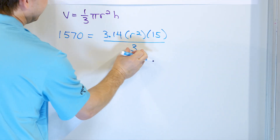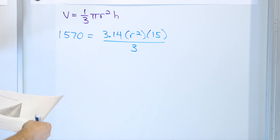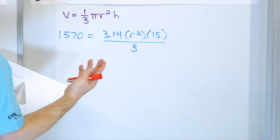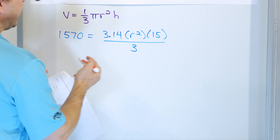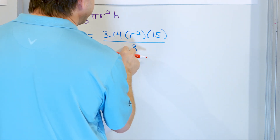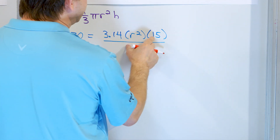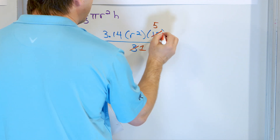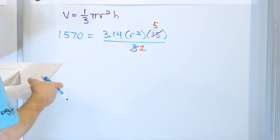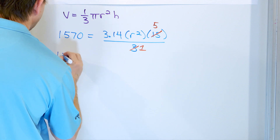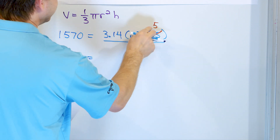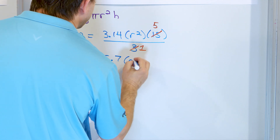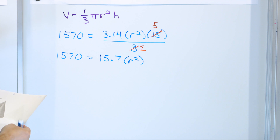Instead of multiplying by a third, I choose to write it as division — it just helps me visualize the cancellation. Now I notice I have a 15 on the top and a 3 on the bottom, so I can pre-simplify. 3 divided by 3 is 1, and 15 divided by 3 is 5. So now I have 1,570 on the left. On the right, 3.14 times 5 works out to 15.7, and I still have to multiply by r squared. On the bottom, I just have 1.